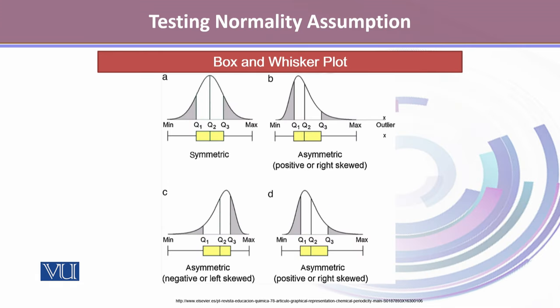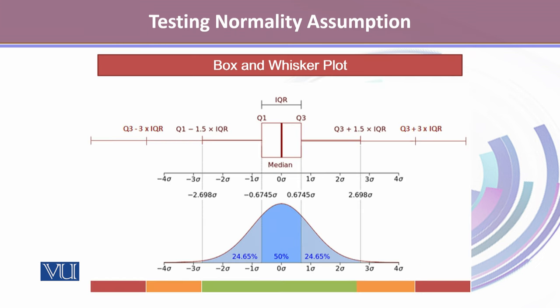The third method is to use the box and whisker plot. The box and whisker plot will talk about the symmetry; it won't directly confirm normality. If the distribution is symmetric, then Q1 and Q3 will be equidistant from Q2, and hence the distribution will be symmetric. But it will be asymmetric — showing positive skew or negative skew — if there is any imbalance between Q1 and Q3's distance from Q2.